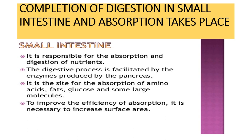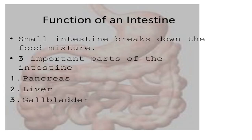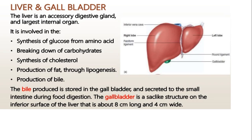The small intestine is a site for absorption of nutrients: proteins are converted into amino acids, fats into fatty acids and glycerol, and carbohydrates into glucose. So the function of the small intestine is to break down the food mixture. Three important parts included here are the pancreas, liver, and gallbladder.